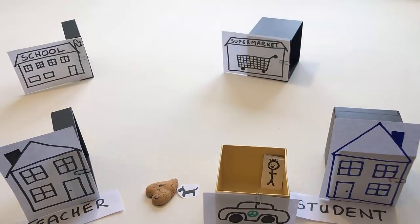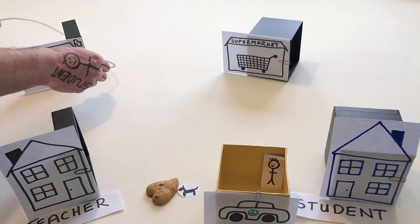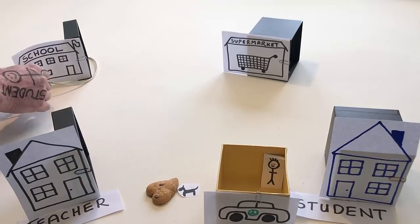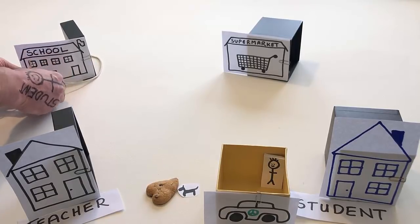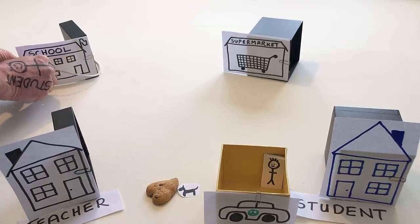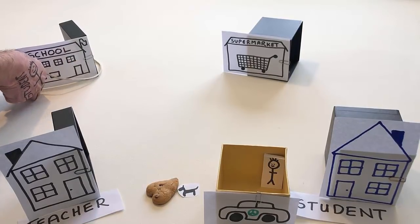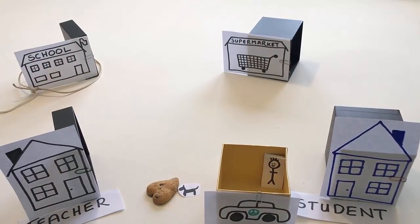Tie a piece of string around the boy's school. Slowly pull the boy's school off the table.